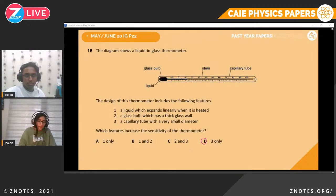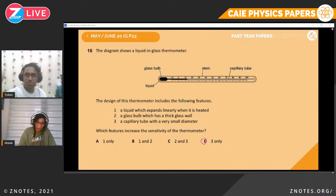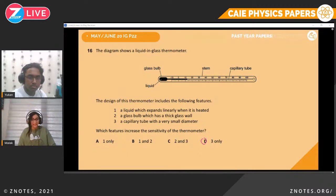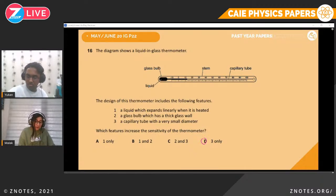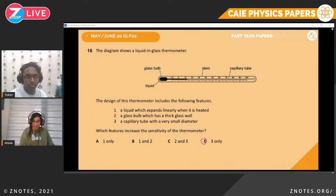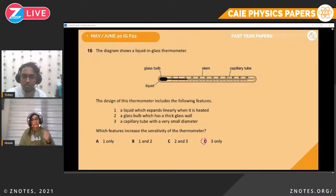Question sixteen. The diagram shows a liquid-in-glass thermometer with these features: a liquid which expands linearly when heated; a glass bulb with a thick glass wall; and a capillary tube with very small diameter. Which feature increases sensitivity? Linear expansion doesn't increase sensitivity. Thick glass wall prevents temperature escape but doesn't affect sensitivity. The very thin capillary tube increases sensitivity — the liquid expands more noticeably for the smallest temperature changes. So the answer is feature three.